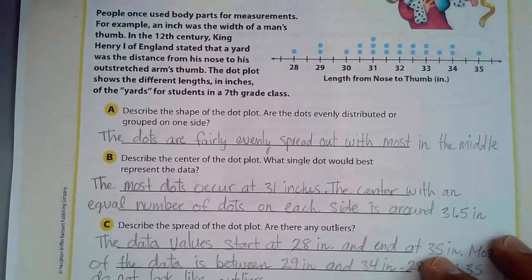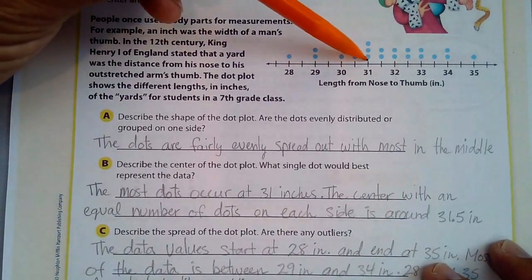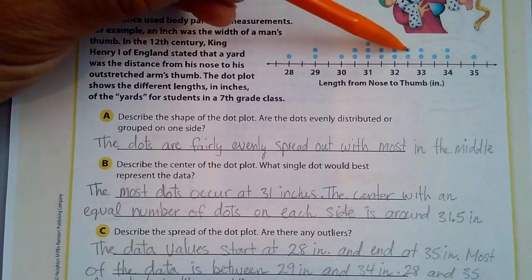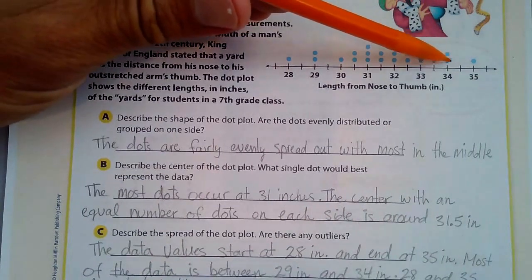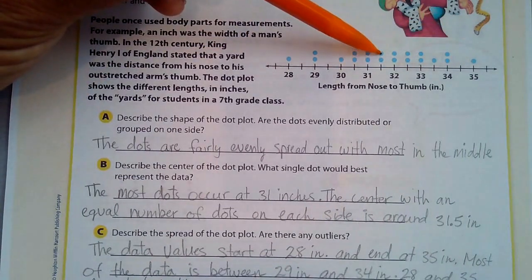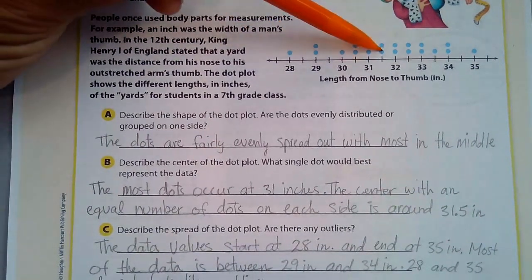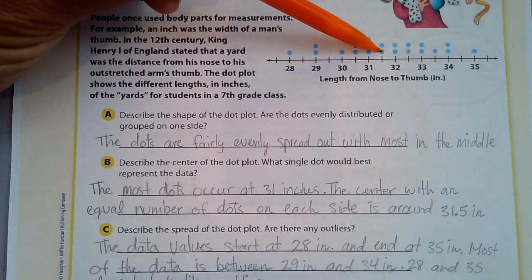If I go to, here's 31, 31.5. If I count, maybe this one here, and then to the right of it, 1, 2, 3, 4, 5, 6, 7, 8, 9, 10. And then I count here, 1, 2, 3, 4, 5, 6, 7, 8, 9, 10. So here they're talking about that's the center right there, because there's an equal number of dots above it and below it.